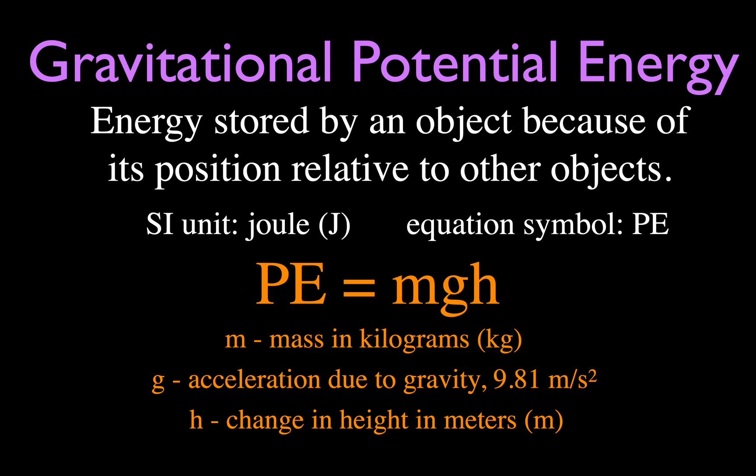The unit for energy is the joule, and the symbol for potential energy is PE. The equation for gravitational potential energy is PE equals mass times g times h, where mass m is in kilograms, acceleration due to gravity g is 9.81 meters per second squared, and height h is measured in meters.